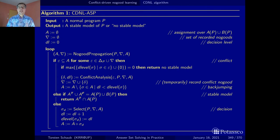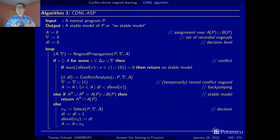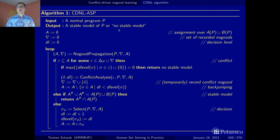Here is the CDNL-based search algorithm for stable models. At this level of abstraction, there's no real difference to the CDCL-based algorithm used in satisfiability testing. The only thing we do here is use no-goods, while in satisfiability testing they use clauses — but they are more or less the same thing at this level of abstraction. The input of our algorithm is a normal logic program, and the output is either a stable model or the information that the program has no stable model — that it is unsatisfiable.